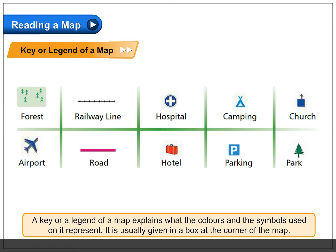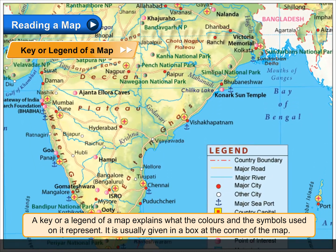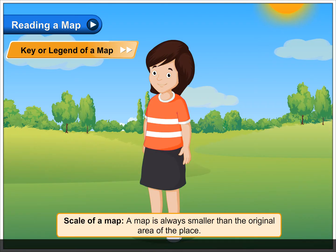A key or legend of a map explains what the colors and symbols used on it represent. It is usually given in a box at the corner of the map.